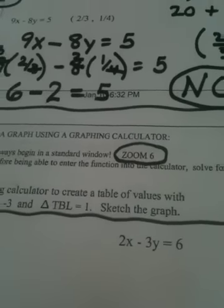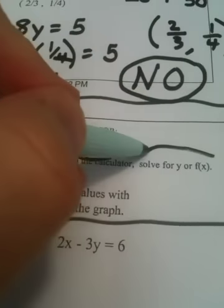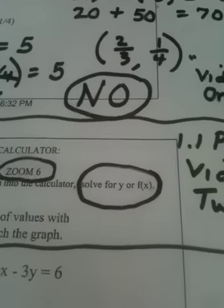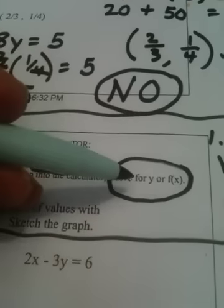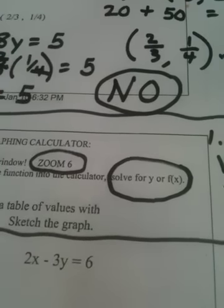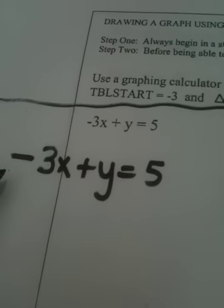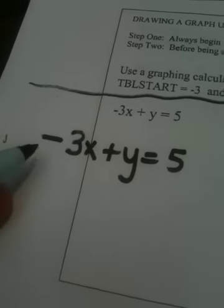Whenever you're trying to use a graphing calculator, there are two steps. Zoom six is the first one. The second step is always solve your equation for y or f(x), because remember from Math 1033, y and f(x) are the same thing. So I cannot start graphing this because y is not alone.